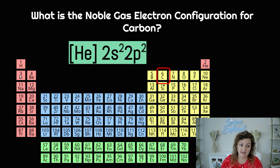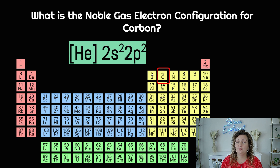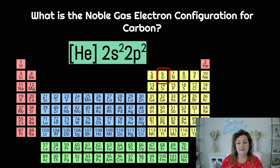You start at the far left side, just like reading a book, and go from there. So this is the second row, so 2s2 right here. And then we go all the way over, and then 2p — how many are we going over? 1 and 2. So 2p2. And that lets us know that it is carbon. This is a much reduced way to do this, and it is a really nice shortcut.